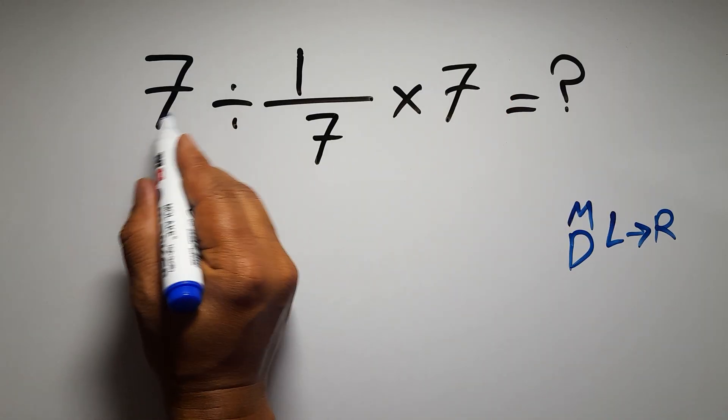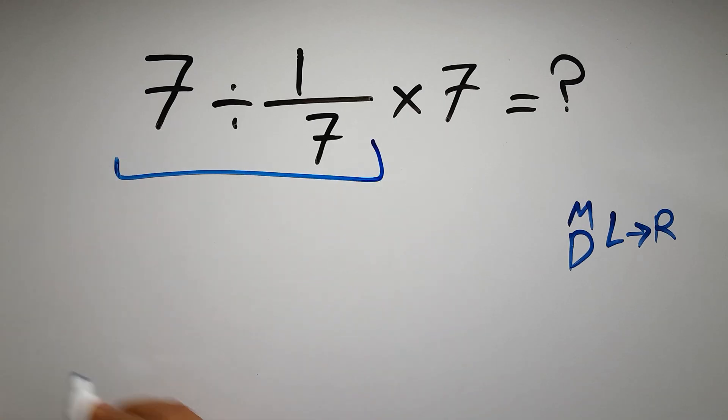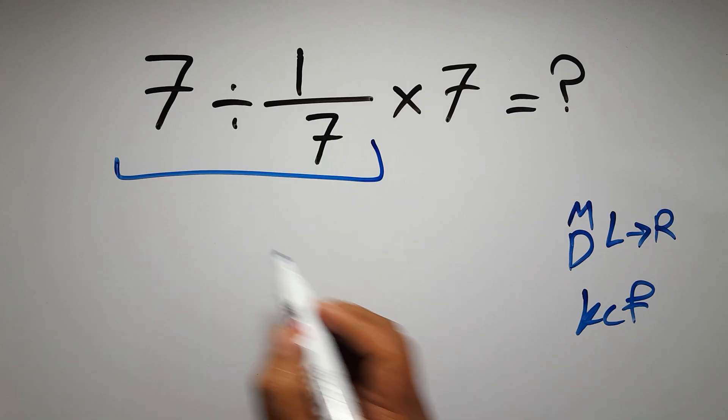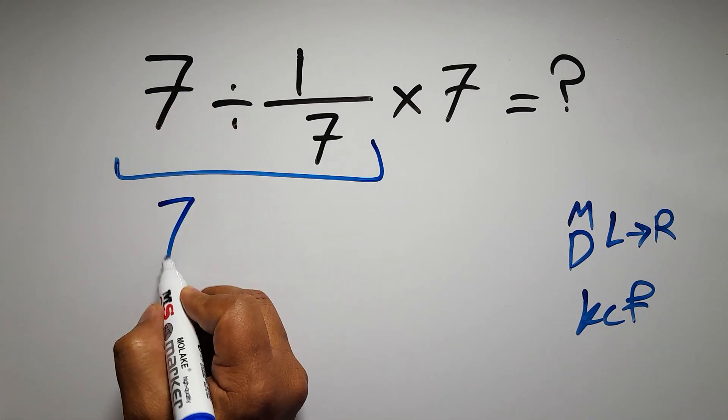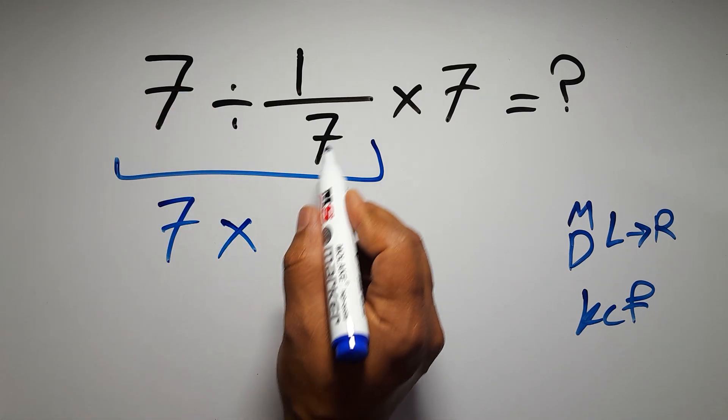So first, this division: seven divided by one over seven. According to the KCF rule, K stands for keep, C stands for change, and F stands for flip. We can write: keep the first fraction, change division to multiplication, and flip the second fraction.